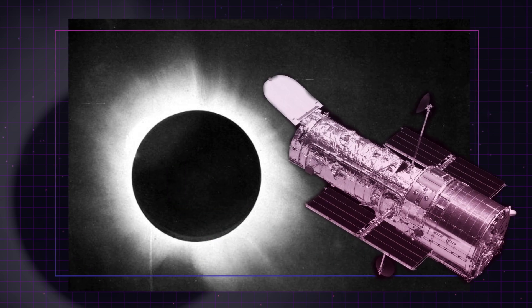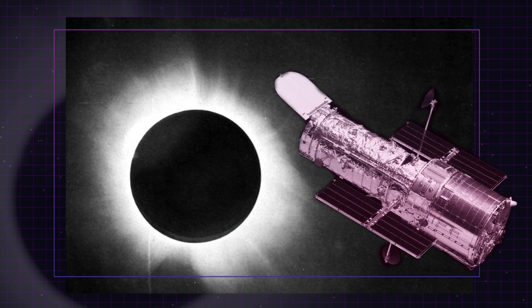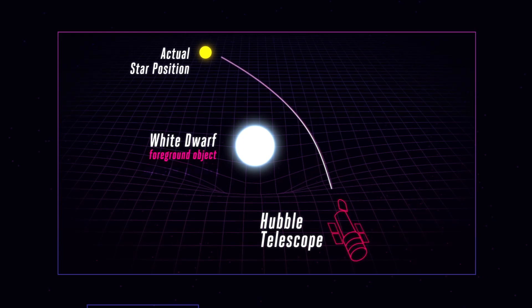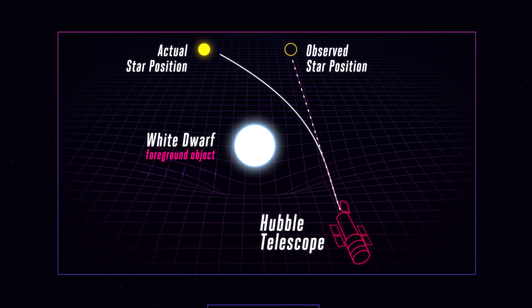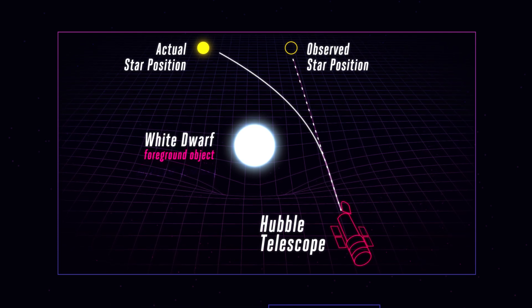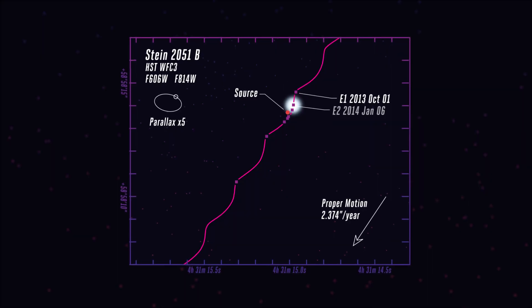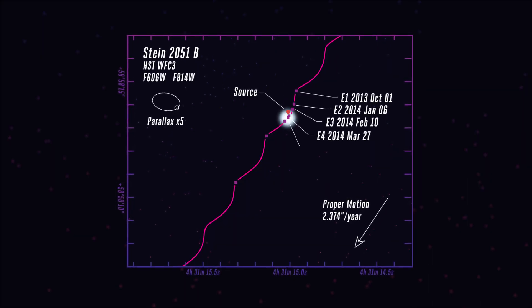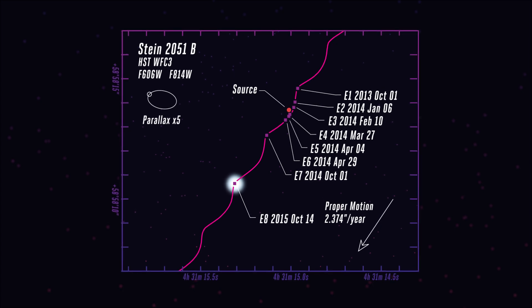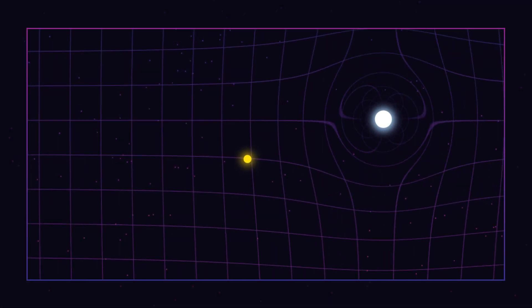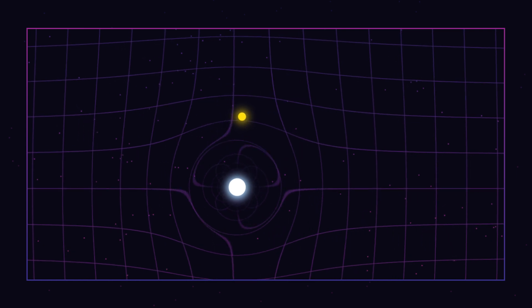But Einstein didn't quite know how sophisticated our telescope technology would become. So in 2014, a group of astronomers using NASA's Hubble Space Telescope spotted this rare type of microlensing when a dense white dwarf star passed in front of another star thousands of light years away. The stars weren't exactly aligned, but close enough that the white dwarf made it seem like the background star performed a little loop in the sky.